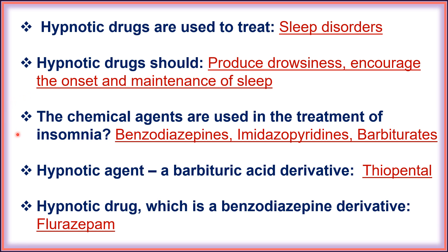Chemical agents used in the treatment of insomnia are benzodiazepines, imidazopyridines, and barbiturates. A hypnotic agent that is a barbituric acid derivative is thiopental. A hypnotic drug which is a benzodiazepine derivative is flurazepam.